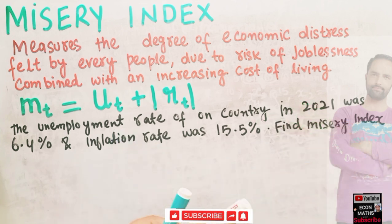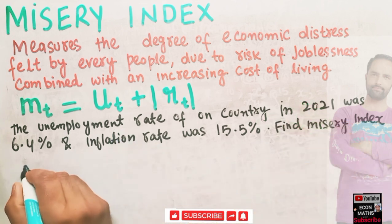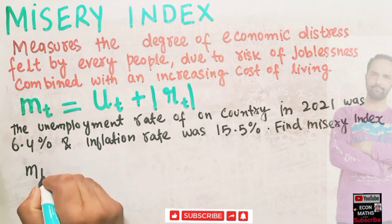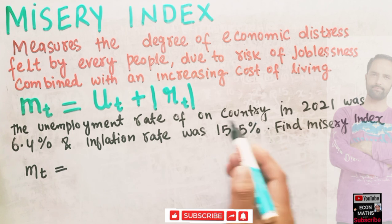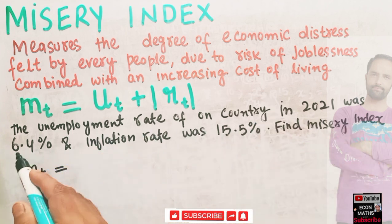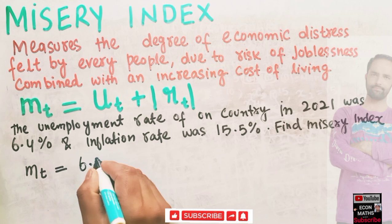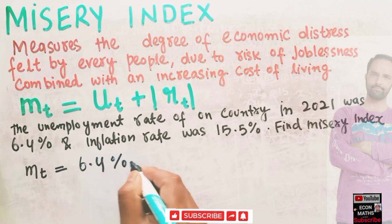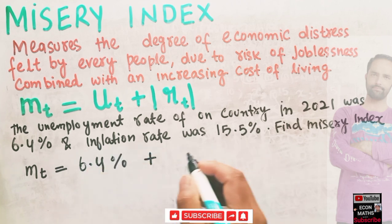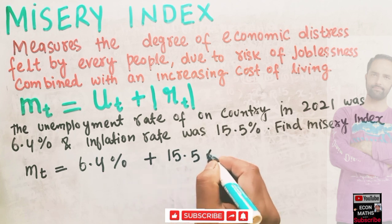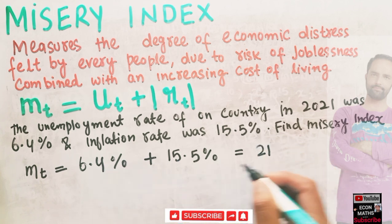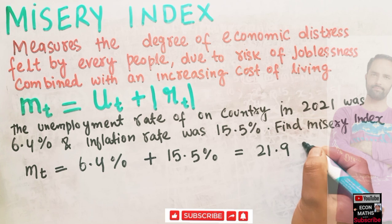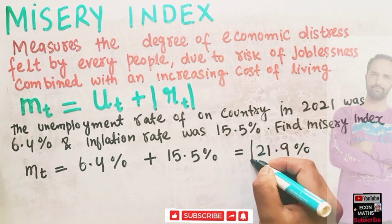So, calculating the misery index: MT equals the unemployment rate of six point four percent plus the inflation rate of fifteen point five percent. Combining these two gives us twenty-one point nine percent.